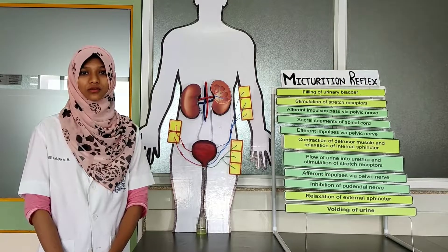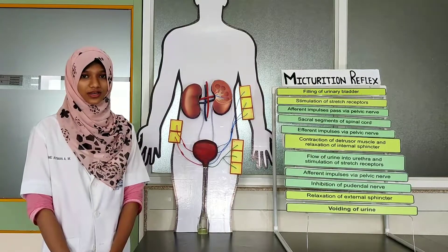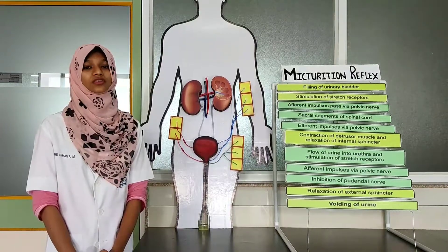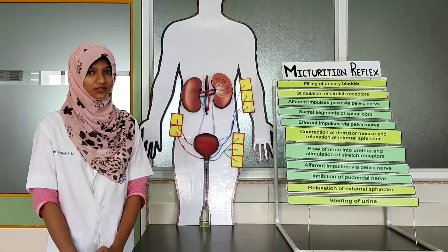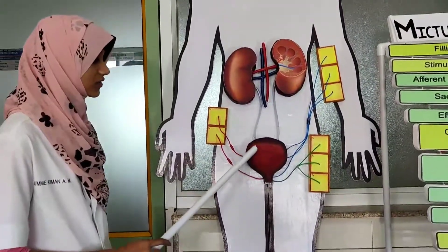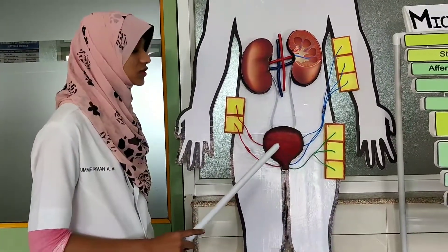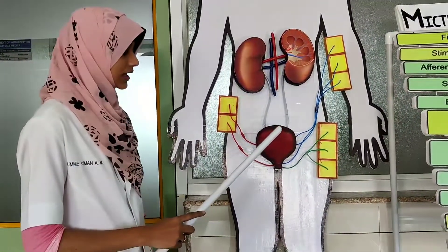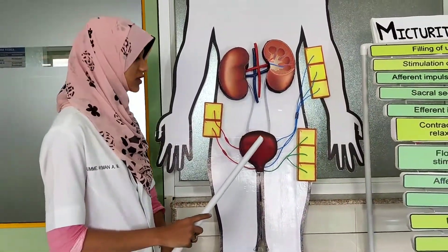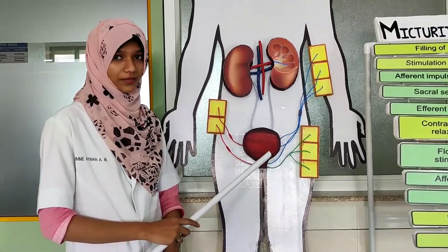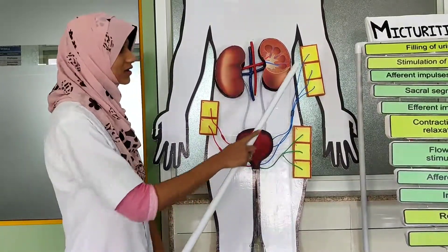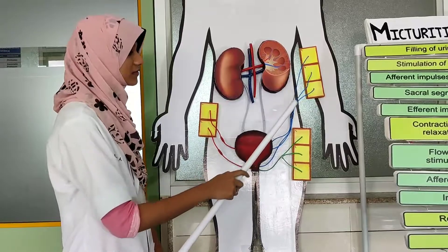Micturition is the process of voiding of urine from the urinary bladder through the urethra. It is a reflex process called the micturition reflex. When 300 to 400 ml of urine is filled in the urinary bladder, the muscles present in the urinary bladder stretch and the intravesicular pressure increases. This causes stimulation of stretch receptors present on the wall of the urinary bladder, which produces afferent or sensory impulses sent to the sacral segment of the spinal cord through the pelvic nerve fibres.